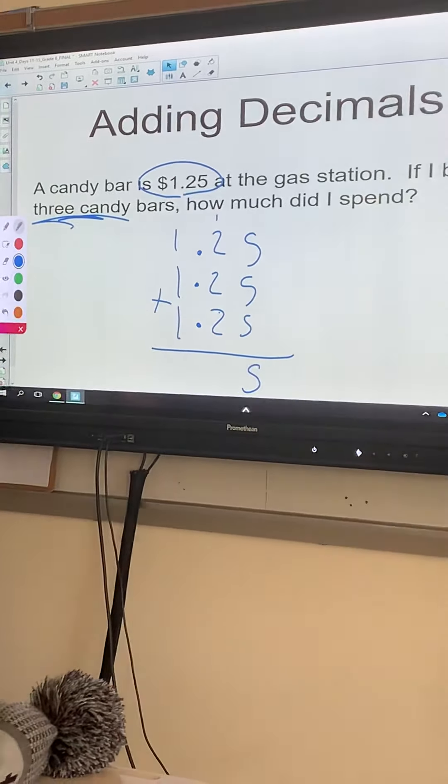Starting with the right side, working left: 5 plus 5 plus 5 is 15. Carry the 1, don't forget about the little 1. Add up my 2's: 2 plus 2 plus 2 is 6, plus the 1 is 7.